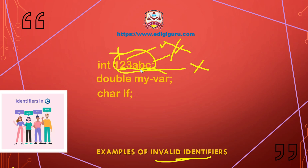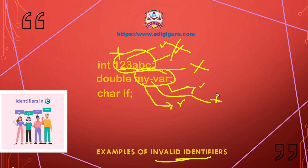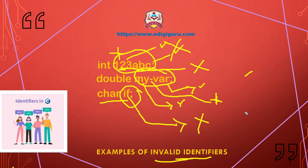Next, 'MY-VAR' is an invalid identifier. Although it includes letters which are allowed, it also contains a dash, which is a special character. Special characters are not allowed except underscores, so 'MY-VAR' is invalid. Finally, 'can_if' is also an invalid identifier because it uses the keyword 'if', which is a reserved word in C and cannot be used as part of an identifier name.